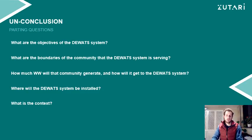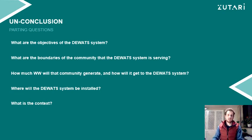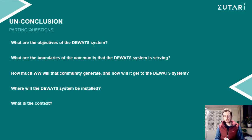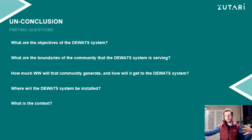Some questions for you to consider: What are the objectives of your decentralized wastewater system? What are the boundaries of the community you're serving — how big is it? How much wastewater will you generate and how will it get to your system — will you create a sewer system, canals? Where would you install it — do you have space, and how could you make that space useful and attractive? What is the context of the site — rural or urban? These are all things you'll work through with your professor.